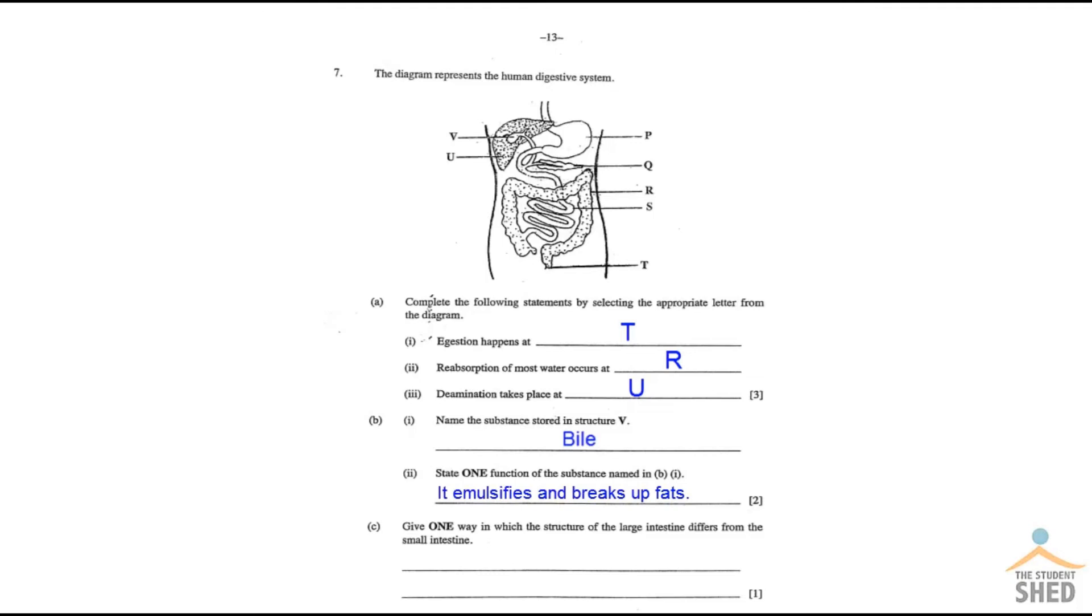7C. Give one way in which the structure of the large intestine differs from the small intestine. Now there are several answers you can pick here. I wrote down two. I wrote down that the large intestine has a wider diameter and it contains no villi. So that's the first part of the question.